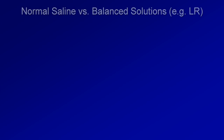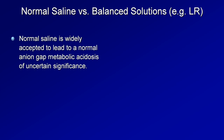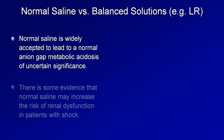So that answers the crystalloid versus colloid question. But what about the different types of crystalloid — that is, normal saline versus balanced solutions such as lactated ringers? There's a common observation that internists seem to prefer saline while surgeons and intensivists prefer balanced solutions. Normal saline, which some argue is not very normal at all, can lead to a normal anion gap metabolic acidosis of uncertain significance. In addition, there is some evidence that normal saline may increase the risk of renal dysfunction in patients with shock, specifically by inducing renal vasoconstriction.